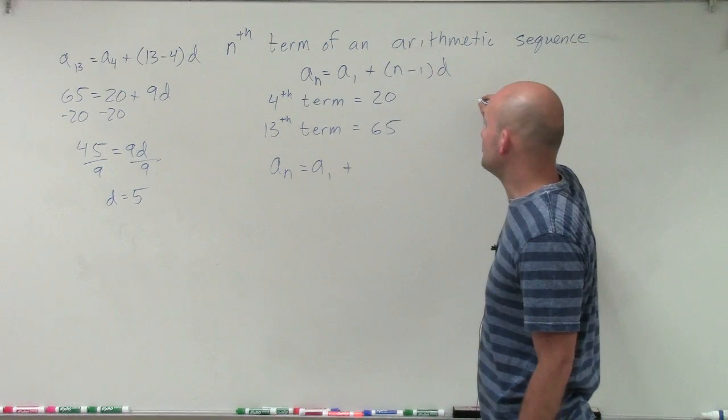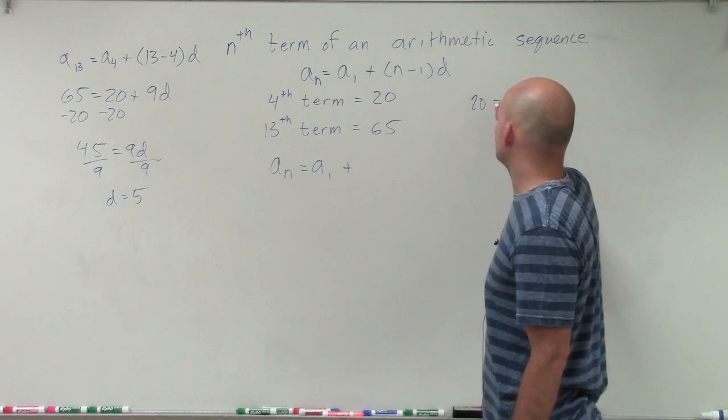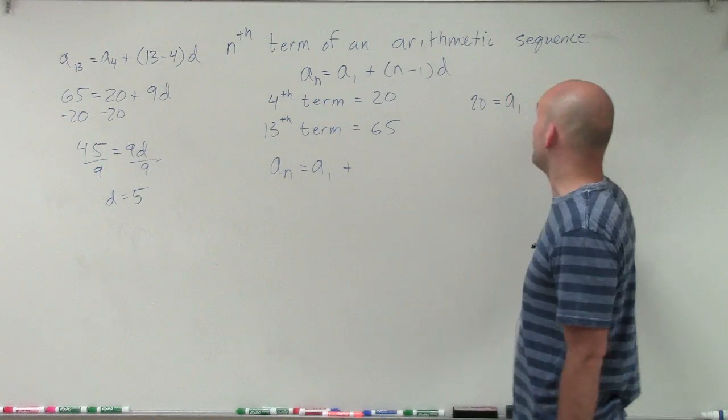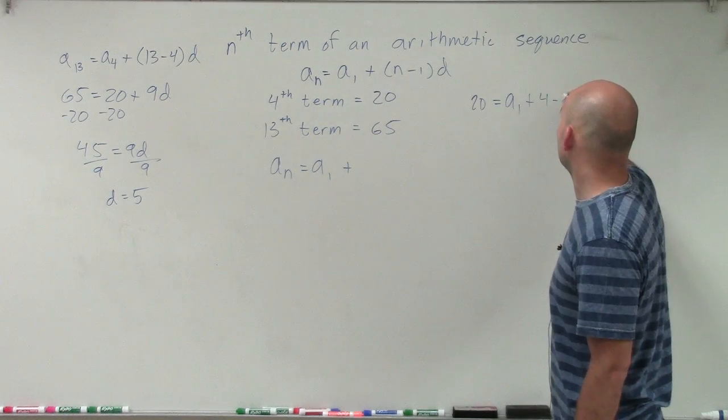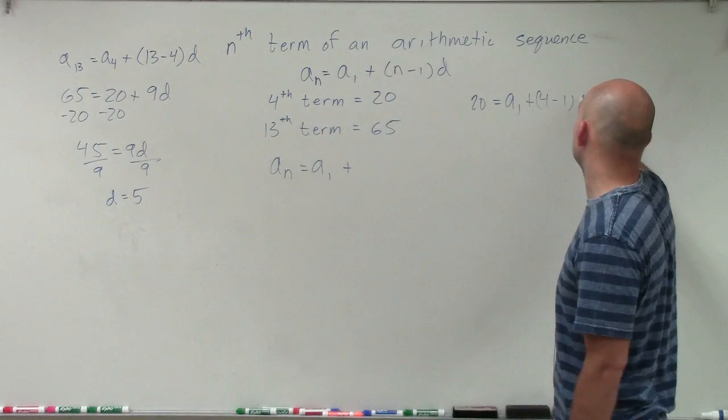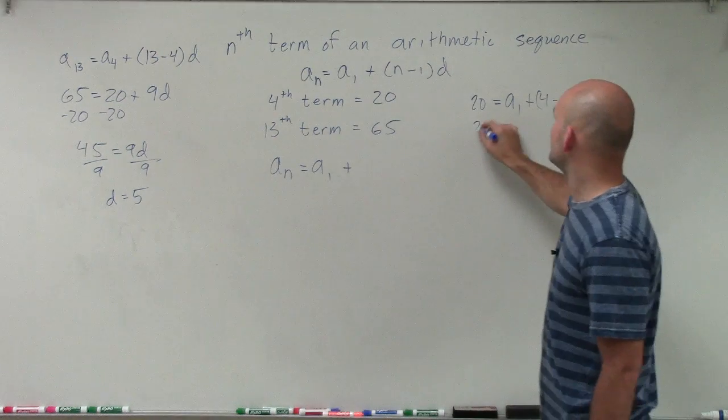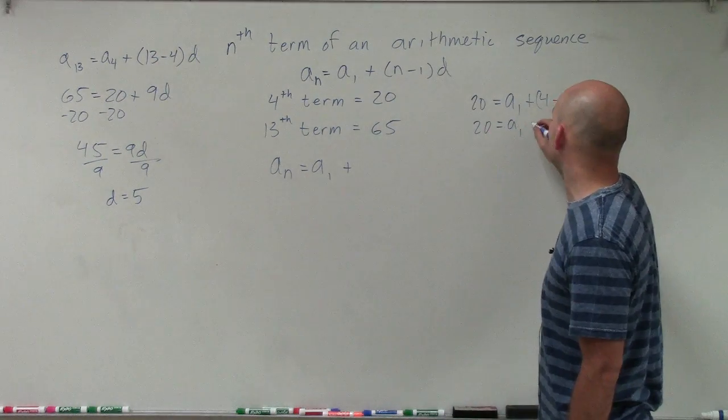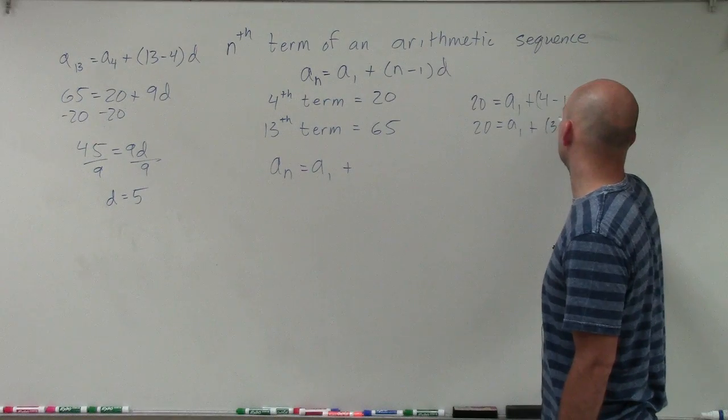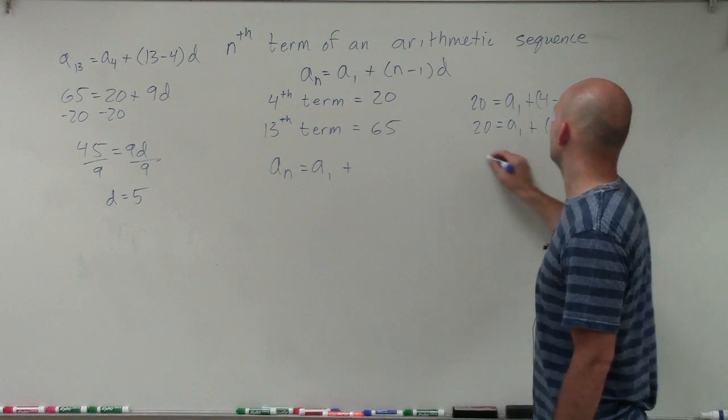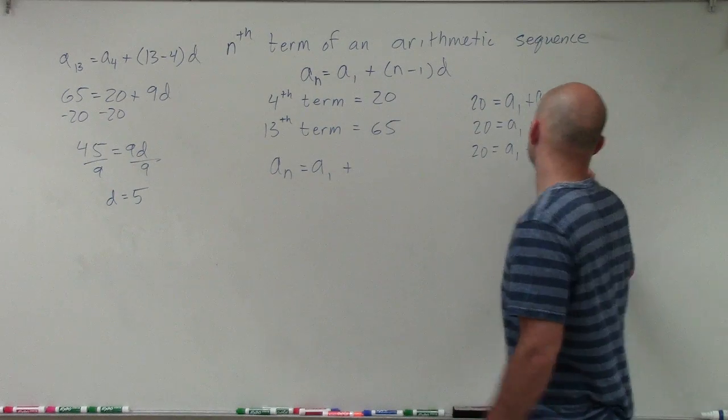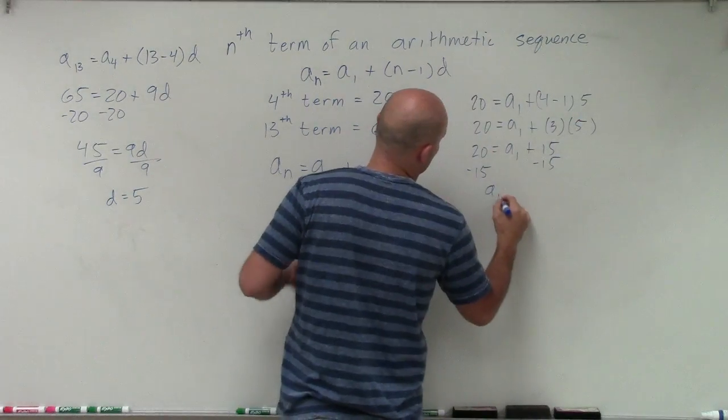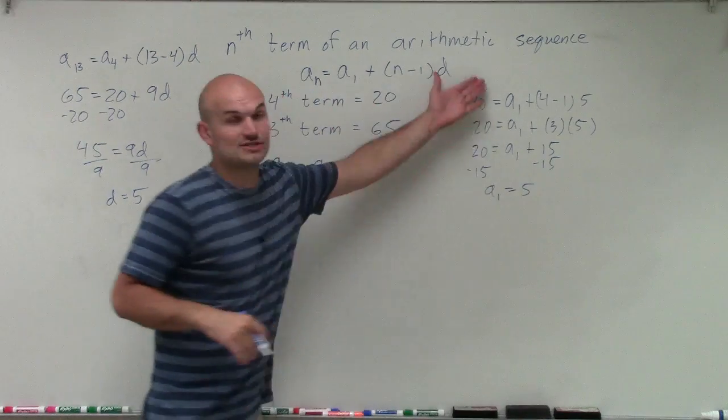So I know a sub 4, which would be 20. So I could say 20 equals, I do not know what a sub 1 is, plus 4 minus 1 times my difference, which is 5. And you could say 20 equals a sub 1 plus 3 times 5. 20 equals a sub 1 plus 15, minus 15. And you could say a sub 1 equals 5. So you could follow that process.